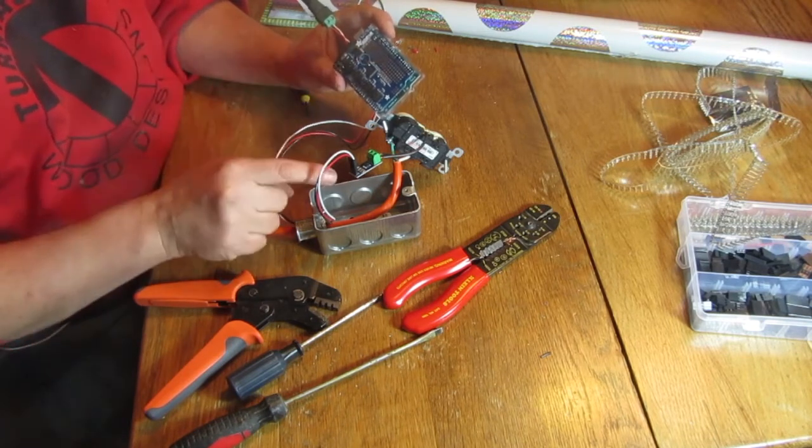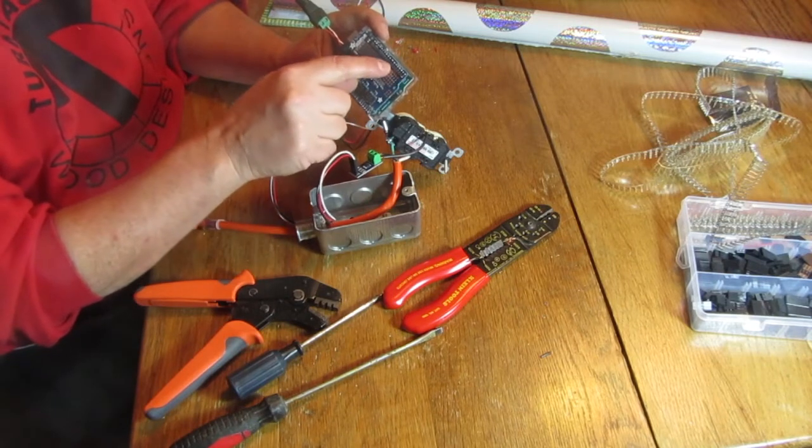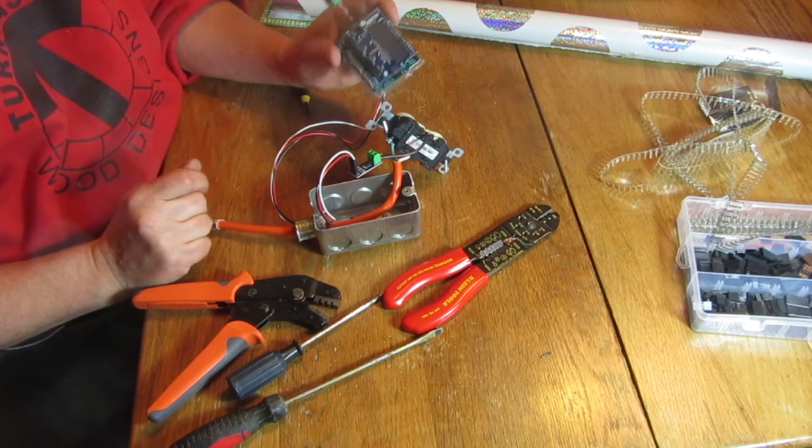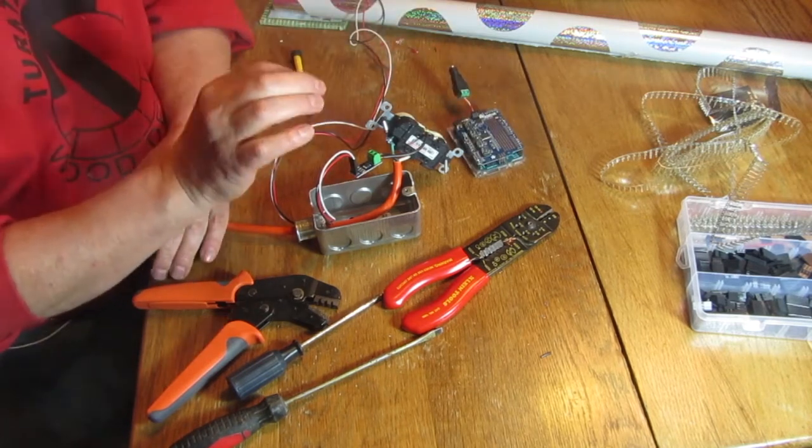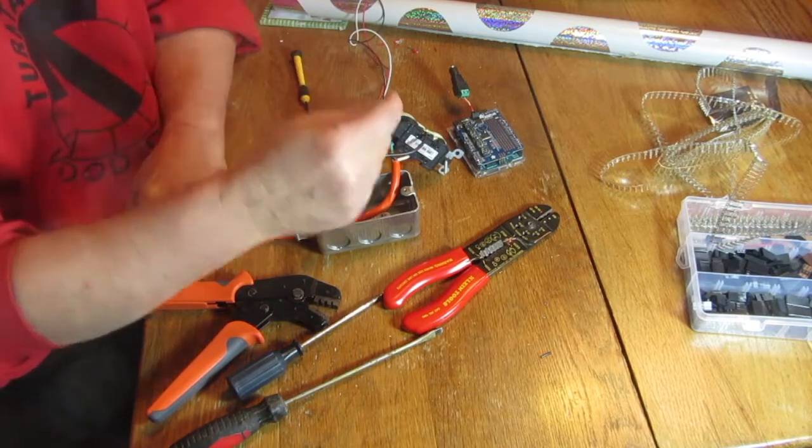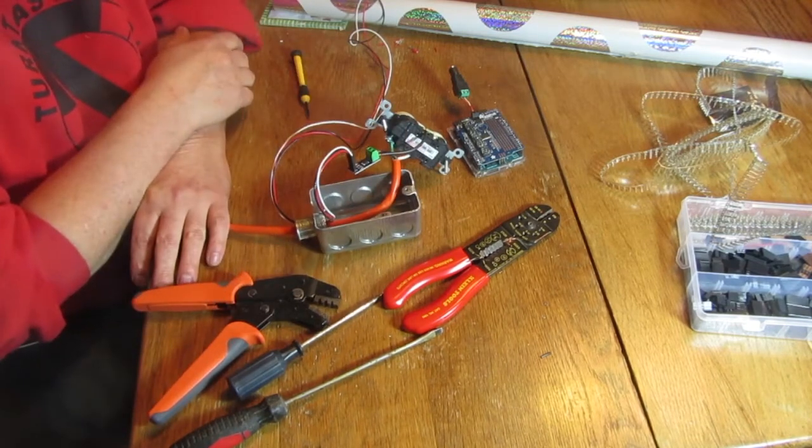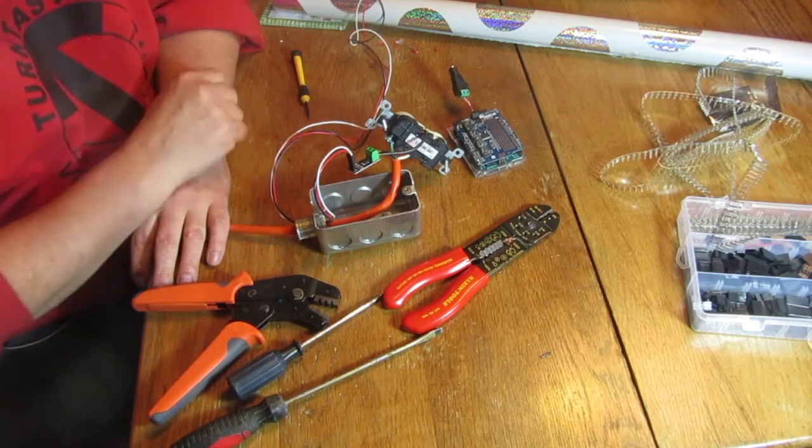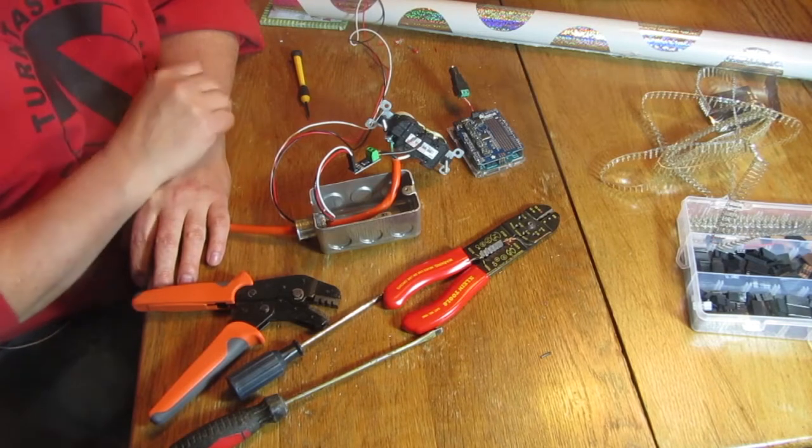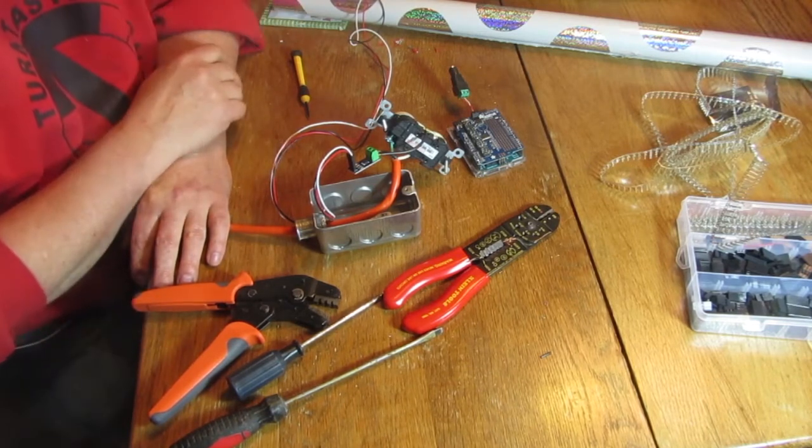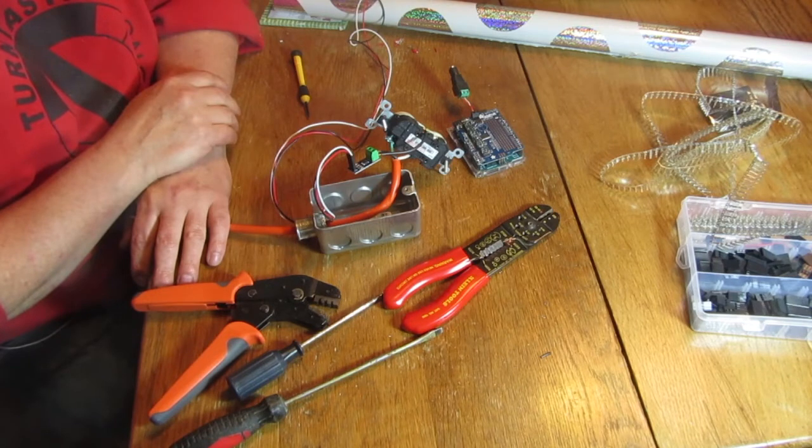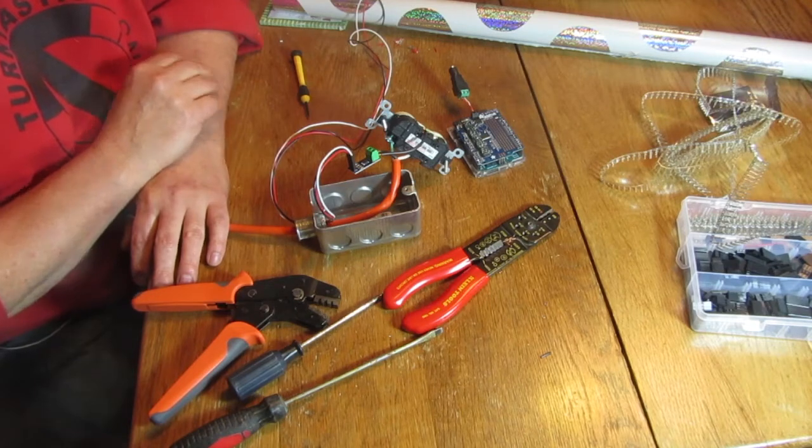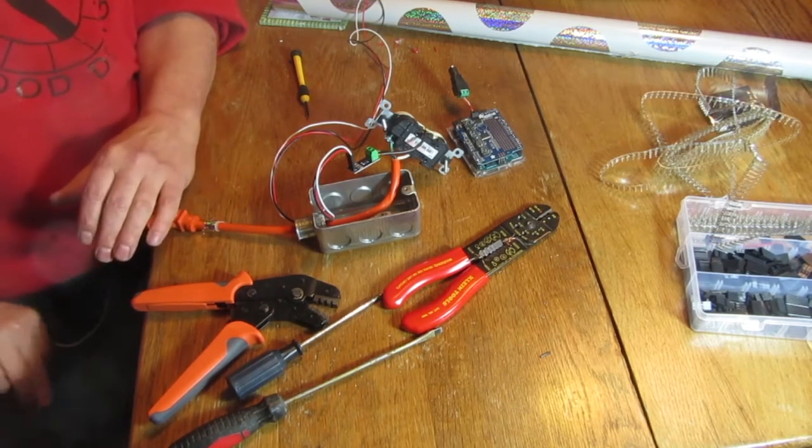This device measures the current that's coming through that line all the time. When a tool is turned on or off, the amount of current going through the line changes - that's how you know a tool has been turned on or off. It will send that change information back to the Arduino, and the Arduino can say, hey, a tool has turned on or off, and I can take action.